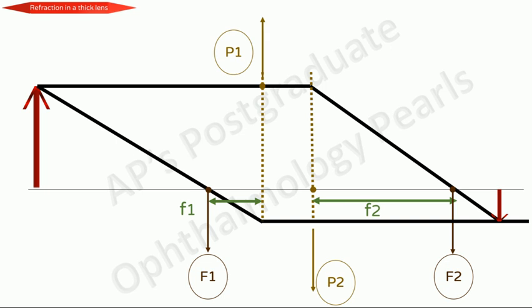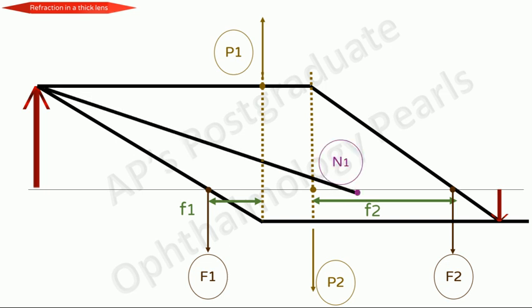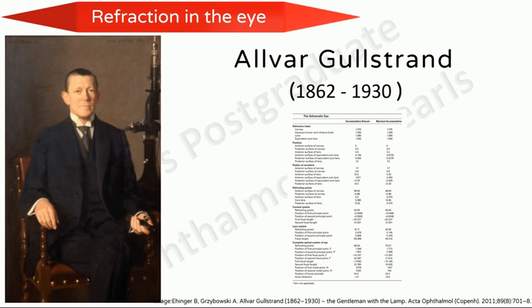There are two nodal points in a thick lens such that a ray that passes through the first nodal point leaves the lens as if from the second nodal point, in the same direction and parallel to it. The nodal points are distinct from the principal points when the medium on both sides of the lens is different. Nodal points are particularly useful for determining image size. This paradigm can be applied to any number of lenses of any thickness in any medium. Now that we have understood the concept of cardinal points, we can study the schematic eye.